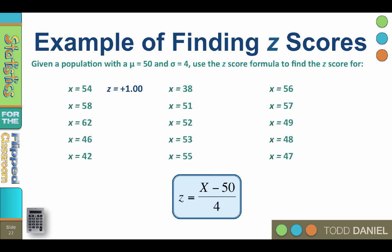Well how about an x value of 58? Plug in 58 into the formula, or think that 58 is two standard deviations above the mean. Either way, z equals positive 2.00.